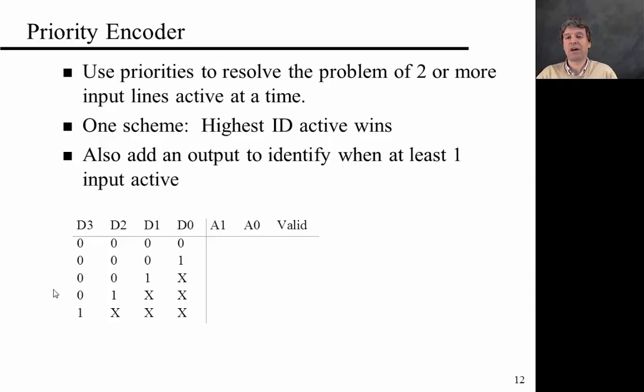So now the next question is how can we fix these two issues? We're going to build a priority encoder. We're going to use priorities to resolve the problem of two or more input lines being active at the same time. In this particular case we're going to choose a scheme where the highest ID that's active wins. We're also going to add an output to identify when at least one input is active.